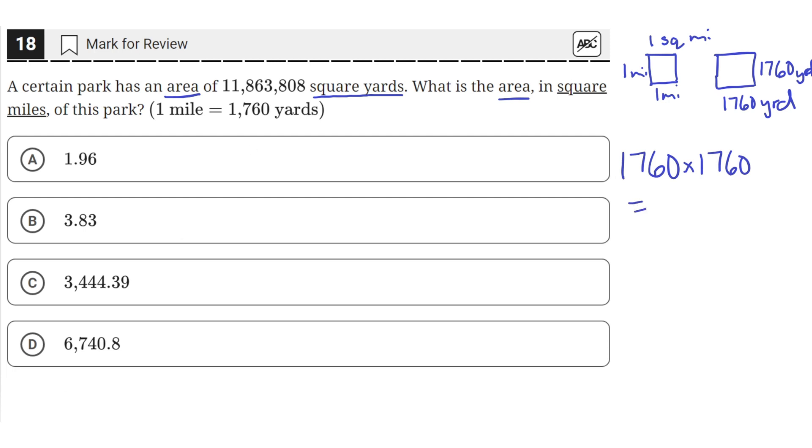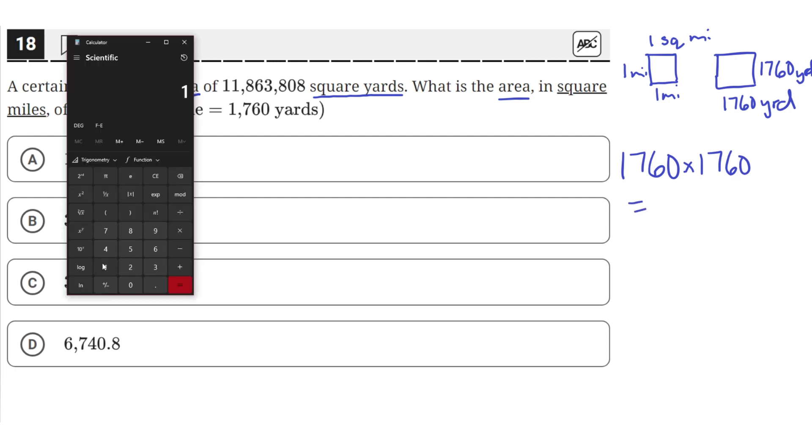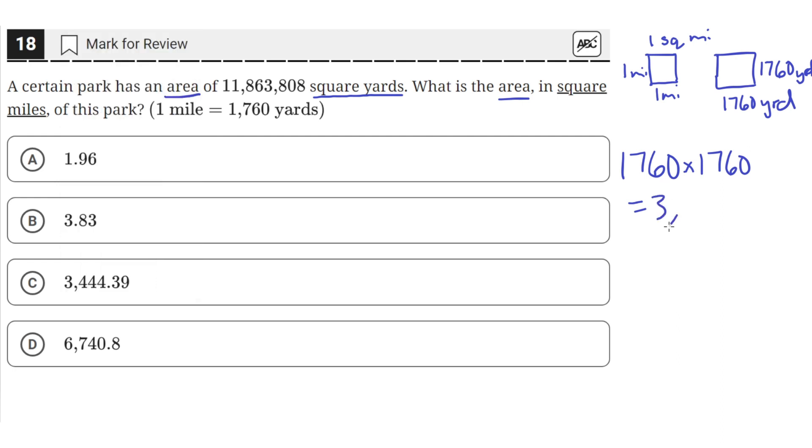we get—let's put that into our calculator—1,760 times 1,760. So that's 3,097,600 square yards.